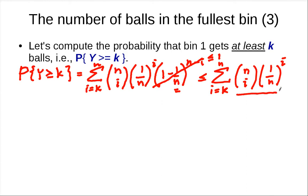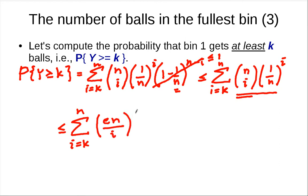Now you cannot simplify this easily because the exponent i changes in the sum. So we do one more simplification: since i is at least k throughout the sum, and as i gets larger this term (e/i)^i gets smaller, we can take i to be its smallest value k to get an upper bound on each term. So we can say each term is at most (e/k)^i.